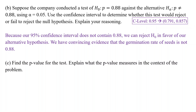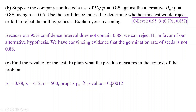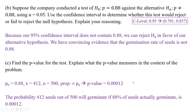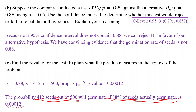If we go ahead and find the p-value for this test, we use our calculator. The information we put into the TI-84: our null is 0.88, X is 412, N is 500, and our alternative is not equal to. It gives us the p-value of 0.00012, which is very small. Interpreting the p-value in context: the probability that 412 seeds out of 500 will germinate if 88% of seeds actually germinate is 0.00012. The p-value is the probability you get the sample proportion if the null is true.